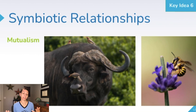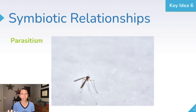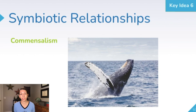Parasitism is when one organism is harmed and the other organism benefits. Mosquitoes are a common example — they take your blood and you end up with an allergic reaction or mosquito bite from that relationship. Commensalism is when one organism neither harms nor benefits from the other, but the other organism does benefit.